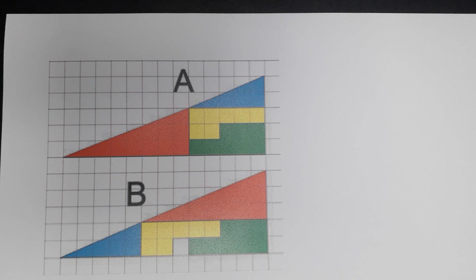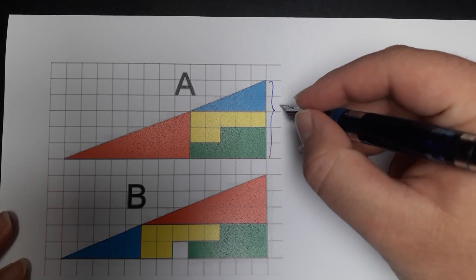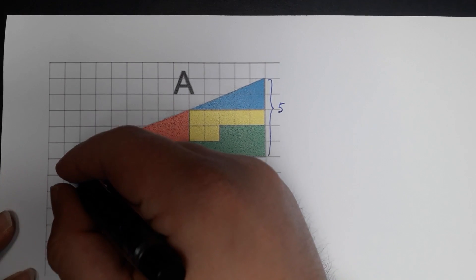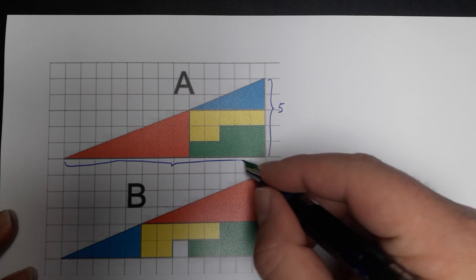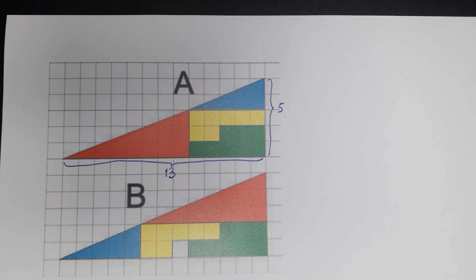You can look at the dimensions of the triangle. It has a height of 5 and the width of the base is equal to 13. So this is 5 and the width of the base is equal to 13. So what we have is this 5 by 13 triangle.